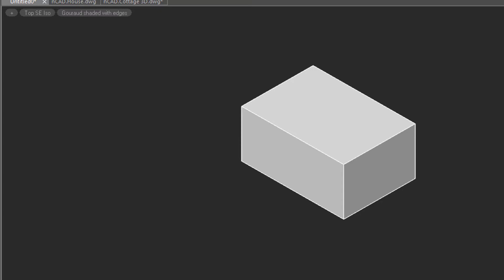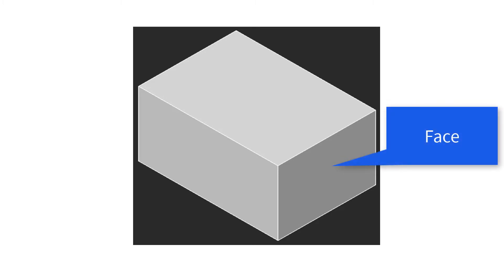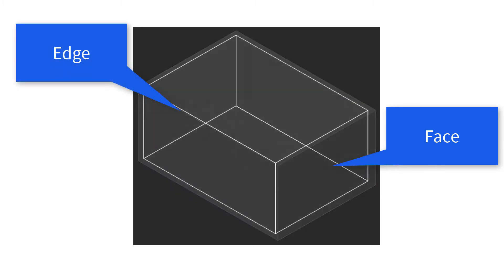Before going further, I should explain the nomenclature — the names of the parts of 3D models. The part you're probably most familiar with is called the face, and that's the flat or curved sides of a 3D model. Faces are joined with edges, and those are the lines you see in wireframes.